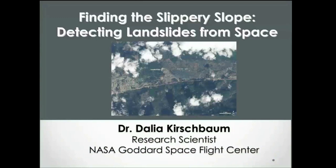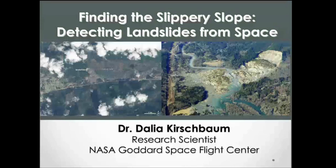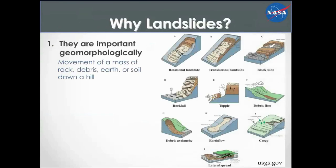What I'm showing here is a Landsat image, which has a 30-meter resolution. You can see in the middle there's a landslide — this is the Oso, Washington landslide, one of the most devastating landslides to hit the United States in recent decades. Up close, this landslide has a pretty large scarp, and it's a rotational landslide that essentially mobilized and blocked a river.